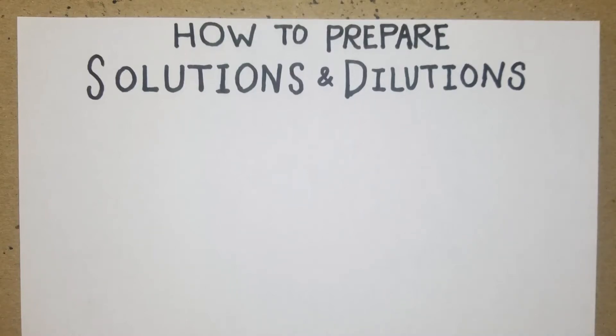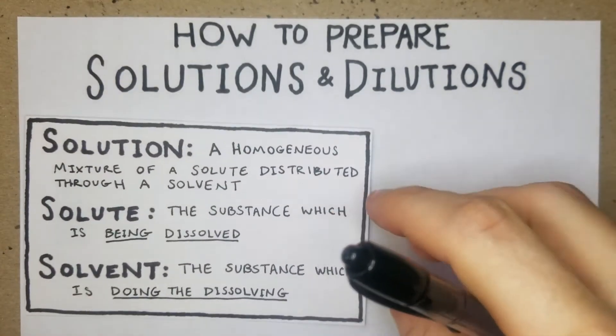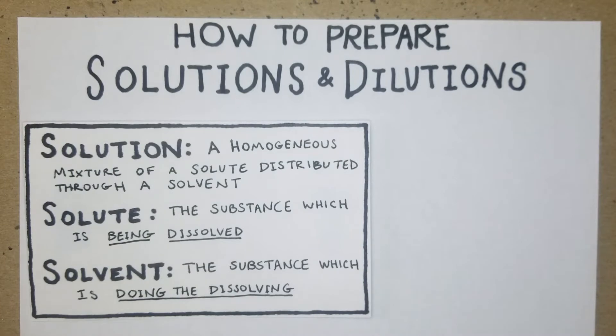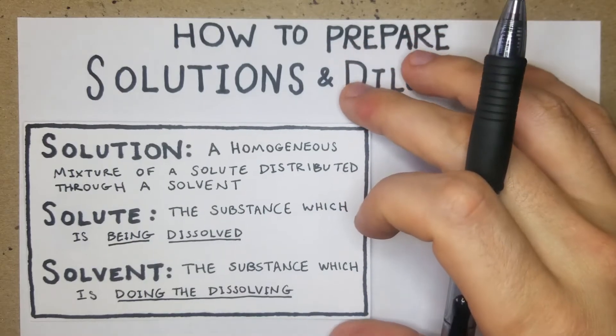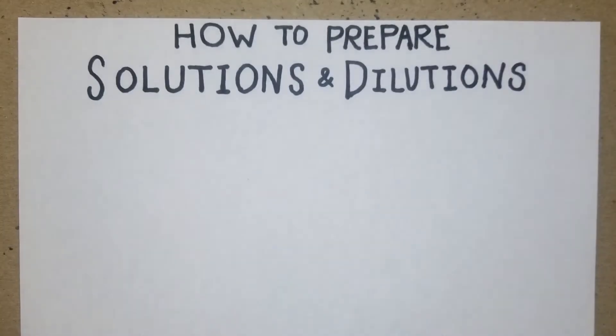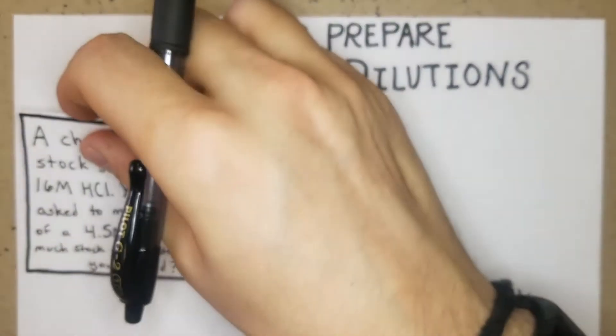How's it going guys? In this video we're going to go over how to solve problems that ask you to prepare solutions and dilutions. First off, we're just going to touch base on those definitions again. Solutions are a homogeneous mixture of a solute distributed through a solvent. A solute is what's being dissolved, the solvent is what's doing the dissolving, and that's usually water. Let's just jump right in.